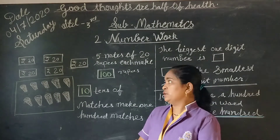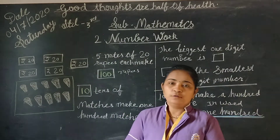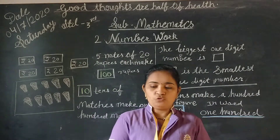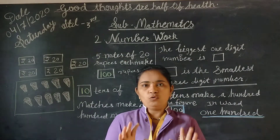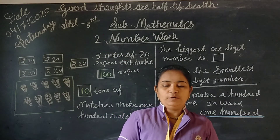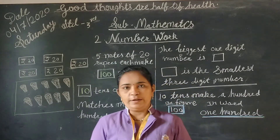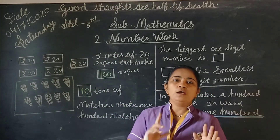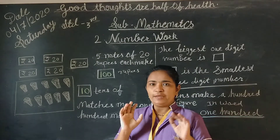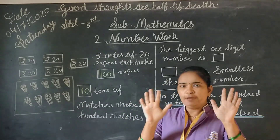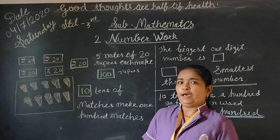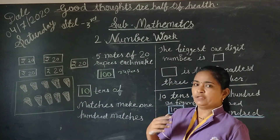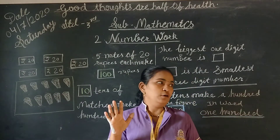Have you understood, students? Today we are learning about introducing hundreds. Any ten group of tens means one hundred. The group of ten matchsticks means one hundred. Any ten of these ten groups means one hundred. If we take the ten rupee notes, we require ten notes to make one hundred. If we take the twenty rupee notes, five notes are required to make one hundred.